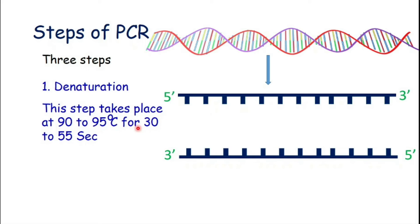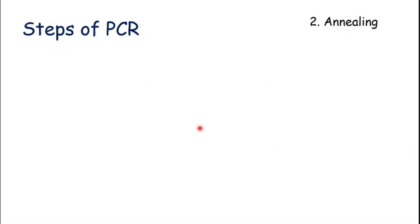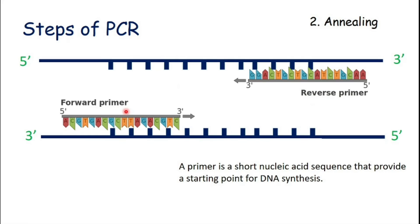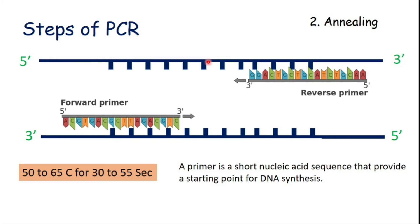The next step is annealing. Before discussing this step we should know about primers. A primer is a short nucleic acid sequence about 18 to 25 nucleotides in length that provides a starting point for DNA synthesis. An important thing to know about primers is that they always bind to the 3' end, because DNA always grows from 5' to 3'. In this step, both primers attach to their complementary sequence on both strands. The temperature used in this step is 50 to 65 degrees Celsius.